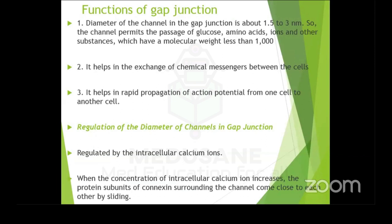For the functions of gap junction: since the diameter is reduced, the channel only permits passage of substances like glucose, amino acids, and ions with molecular weight less than 1000 Daltons — larger substances cannot pass through the narrow 1.5 to 3 nanometer gap. Gap junctions also help in the exchange of chemical messengers between cells, and importantly in the heart they help in rapid propagation of action potential from one cell to another.